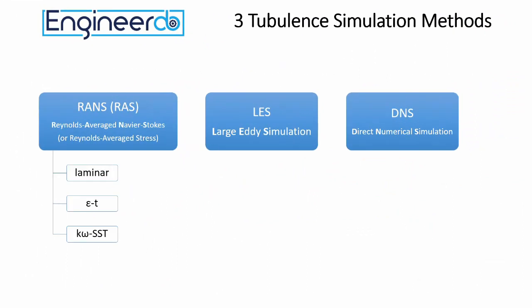The first is the RANS or RAS simulation. This stands for Reynolds Averaged Navier-Stokes or Reynolds Averaged Stress. As the name implies, the solution gives a more or less average result. Within RANS, different turbulence models can be chosen like laminar, K-Omega SST and a few more. Yes, laminar is considered here as a turbulence model.